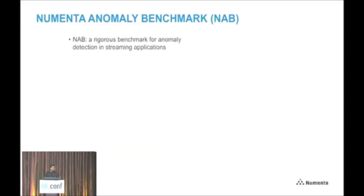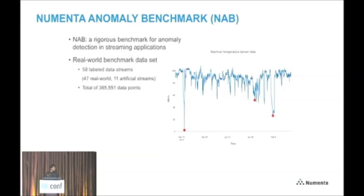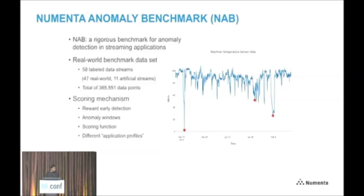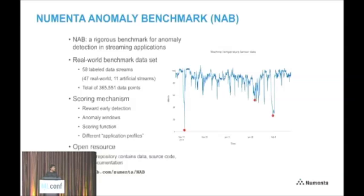So we created the Numenta Anomaly Benchmark, or NAB — a rigorous benchmark for anomaly detection in streaming applications with three basic pieces. First, we include a real-world benchmark data set with over 350,000 individual data points, 47 real-world data sets, and 11 artificial streams. There's a scoring mechanism that rewards early detection, uses generous windows around anomalies, a scoring function, and application profiles controlling the balance between false positives and false negatives. Third, it's a completely open resource — a GPL repository containing all the data, source code, and documentation, all up on GitHub.